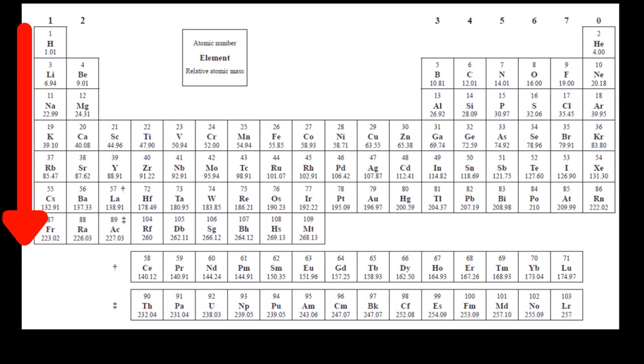The IB wants you to know about the trend in reactivity down Group 1. As you go down Group 1, the reactivity increases. So francium's the most reactive. Francium's the most reactive because in Group 1, it's the biggest one. And metals want to lose electrons, and the valence electron in francium is furthest from the pull of the nucleus, so it can be easily removed.